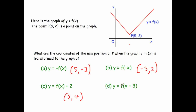Finally for this question, y equals f of x plus 3. You'd think this moves three squares to the right, but it moves three squares to the left. So instead of being 5 across and 2 up, it moves 3 to the left, going to (2, 2).